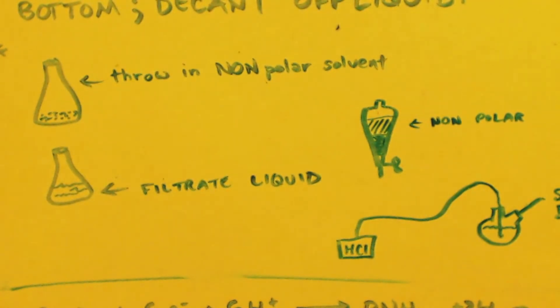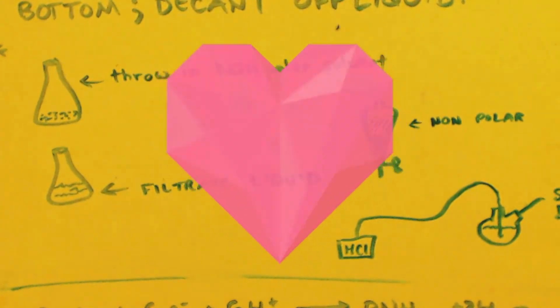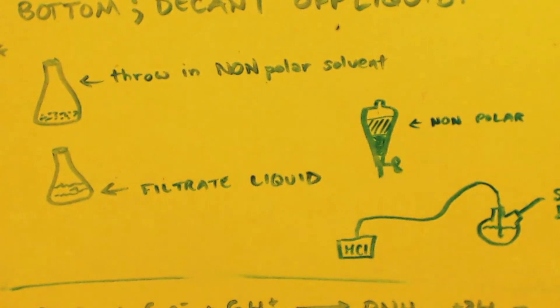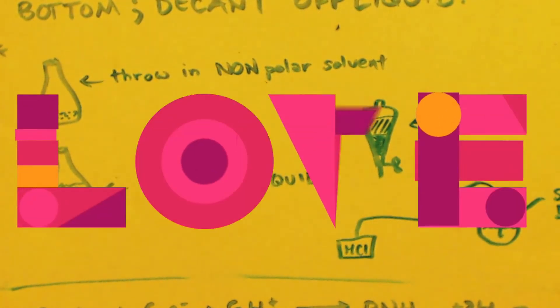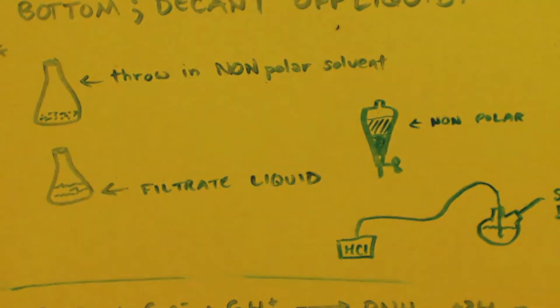It'll turn into methylamine hydrochloride and it will precipitate out as a solid. That's the only thing that's going to precip out as a solid. You can filter it, dry it, and you have a nice pure methylamine hydrochloride salt.